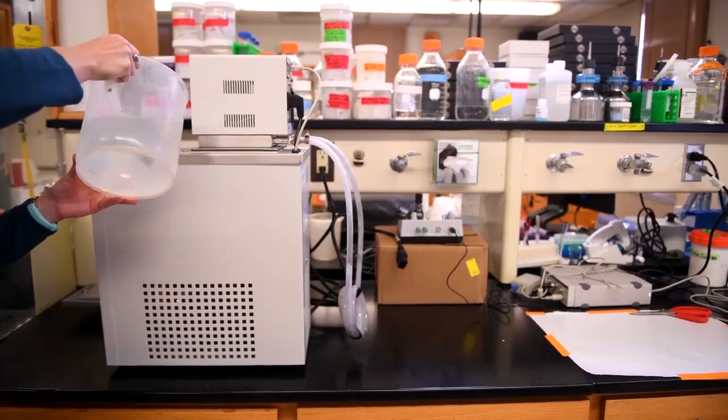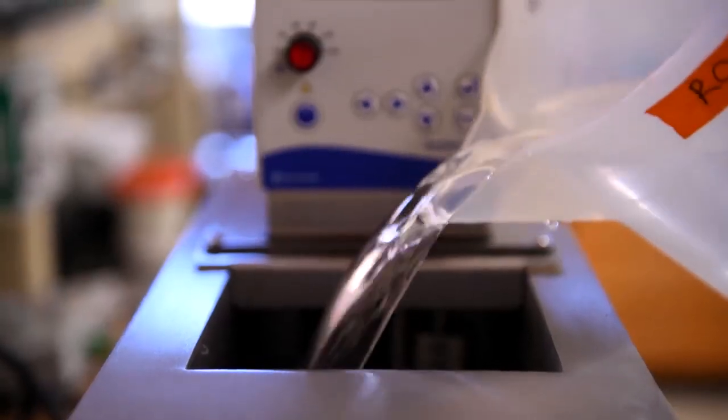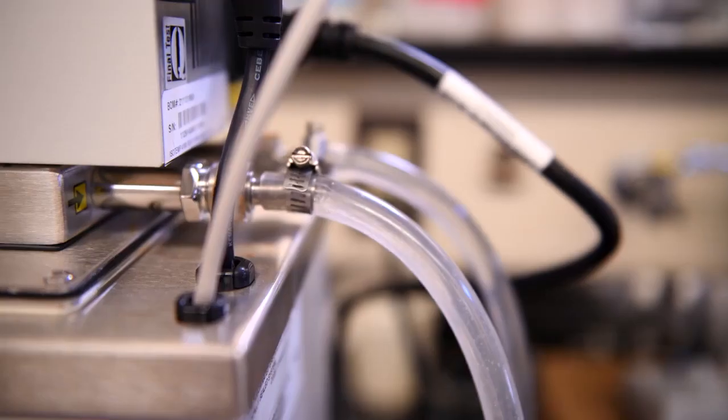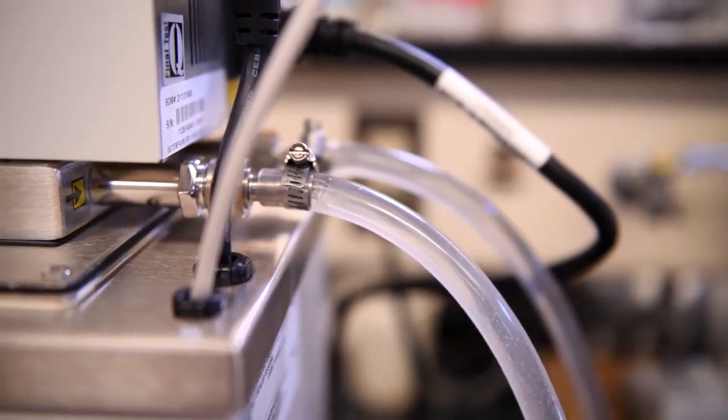Fill the well of the circulating water bath with reverse osmosis water and plug the power cord into an outlet. Turn the water bath on and make sure there are no leaks in its connection to the heat exchanging coil.